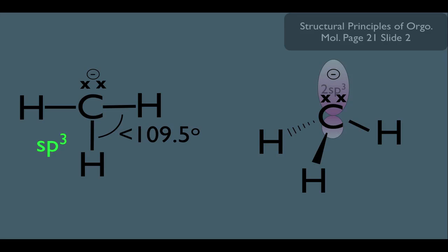Remember, every sp3 hybridized atom has four sp3 hybridized orbitals, and in this case three of them are bonding to the hydrogens, and the one left over is housing the two electrons.